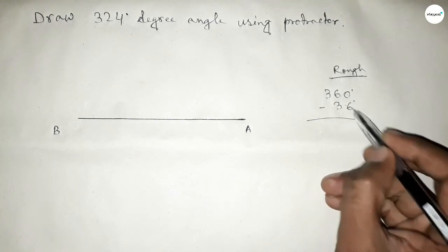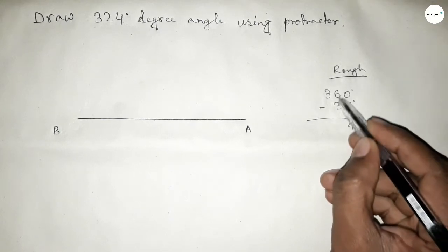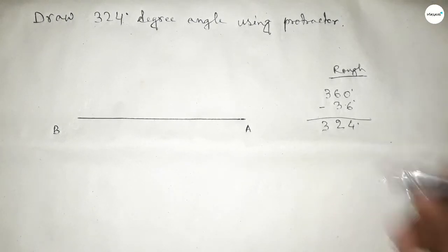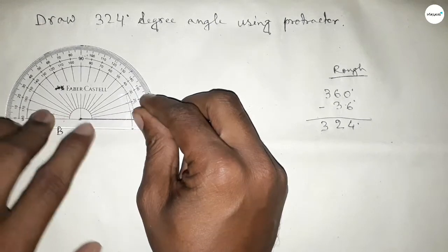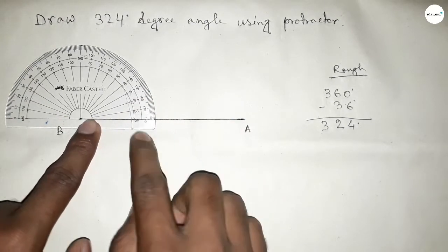So subtracting 36 degrees: 360 minus 36 equals 324 degrees. First, we have to draw a 360-degree angle, so put the protractor on point B and count the angle.